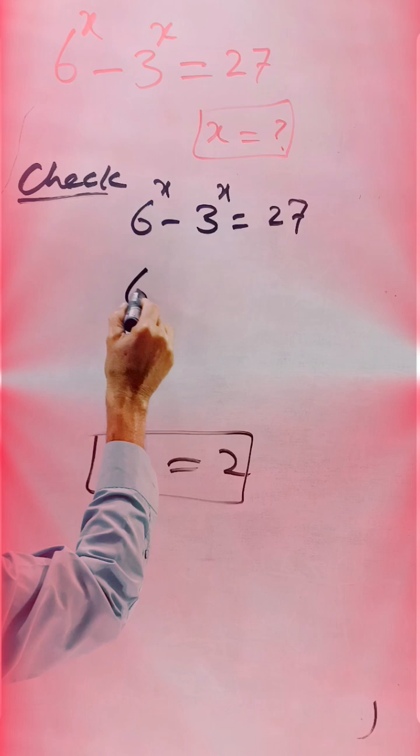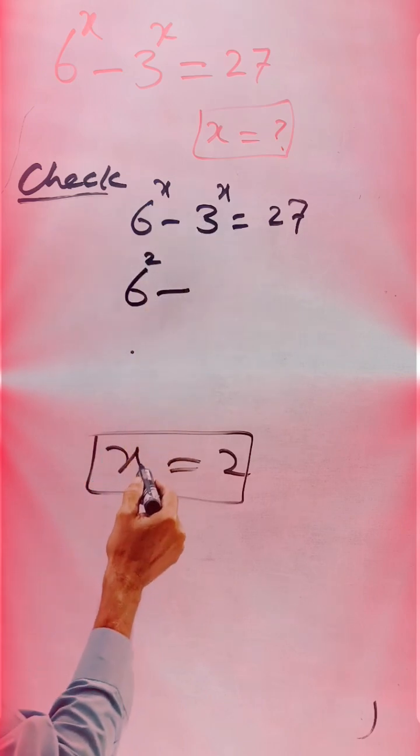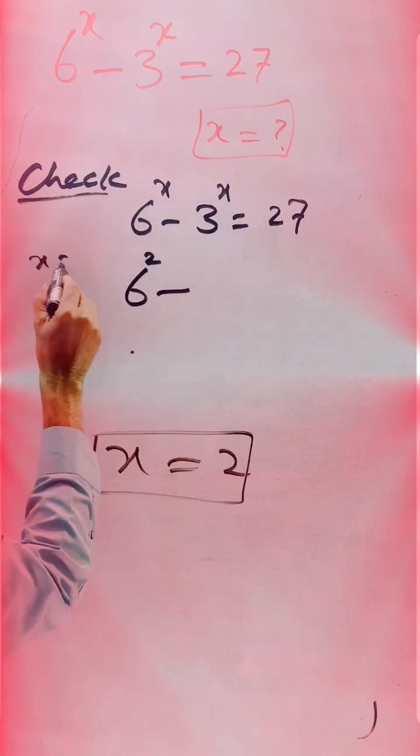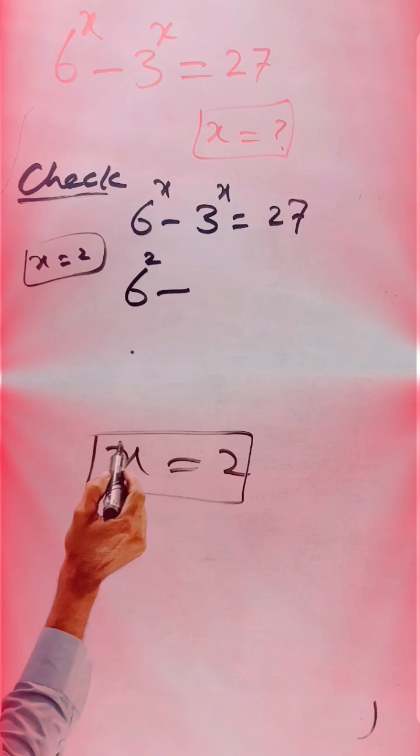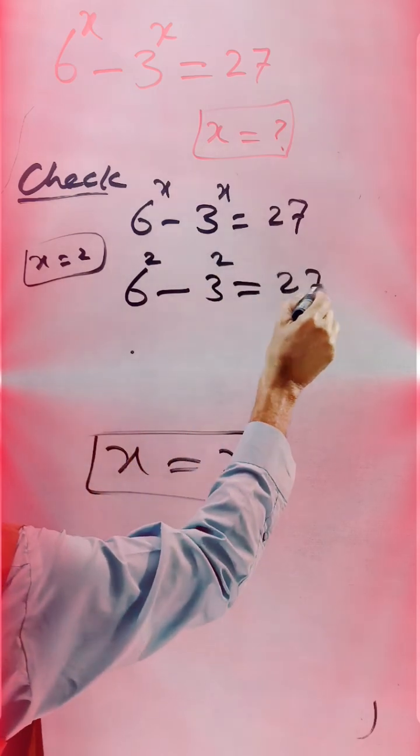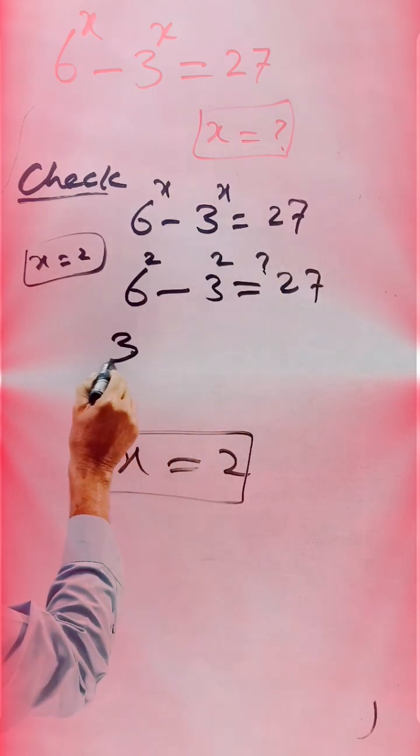If we replace 6 square in place of x is equal to 2, this is x is equal to 2 we replace. We have already 2 as solution, and 3 square is equal to 27 is the question mark.